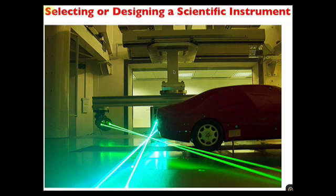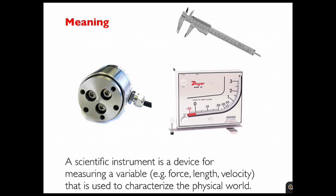This talk is about selecting or designing a scientific instrument. For example, in this image we see a laser Doppler velocimeter, which is used to measure air velocity at this point as air flows around this car. We use scientific instruments every day. Calibers for measuring distance, a torque sensor for measuring torque, a manometer for measuring pressure.